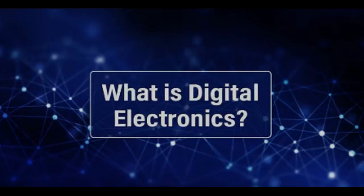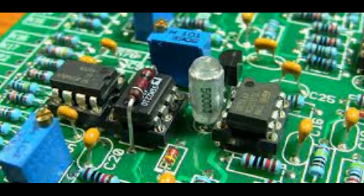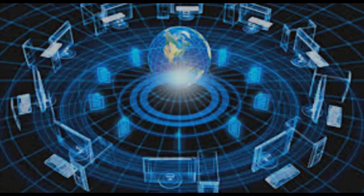Digital electronics is a branch of electronics that deals with digital signals and circuits. It involves the use of discrete, non-continuous signals to represent and manipulate information, in contrast to analog electronics which deals with continuous signals. Digital electronics relies on binary representation, zeros and ones, to process and transmit data.